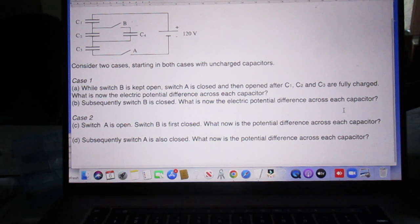Now comes case 2. Third question. And remember, when we start with case 2, all capacitors are not charged. Switch B, A is open. Now we first close switch B. What now is the potential difference across each capacitor? Including signs.